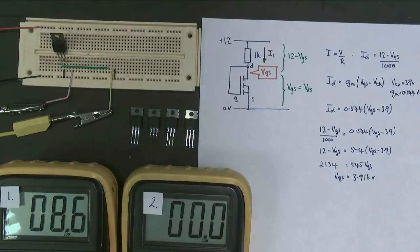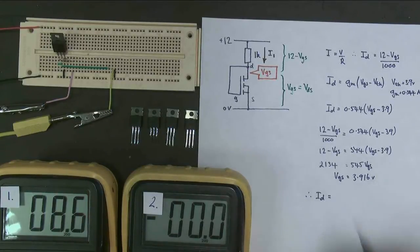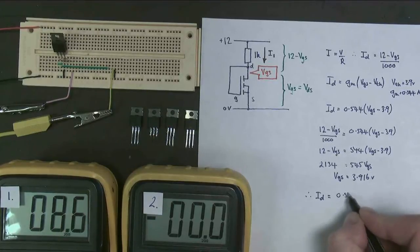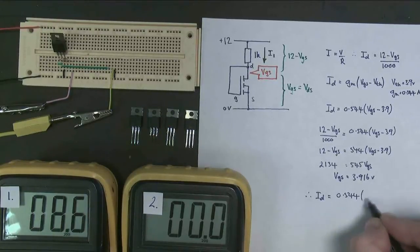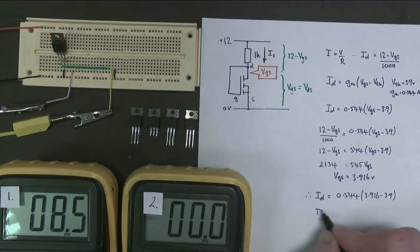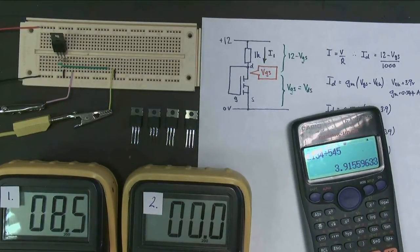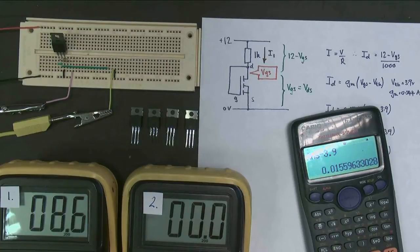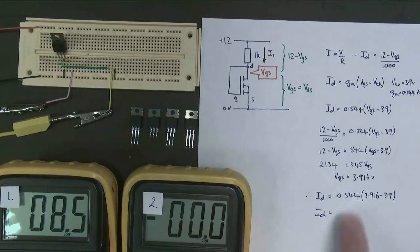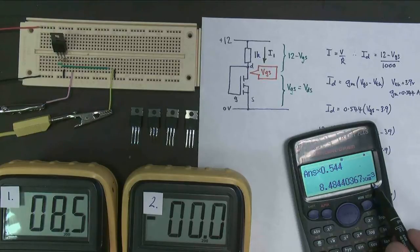Next, let's see if we can work out what the current is. So we'll put it back into this equation here. And therefore ID equals 0.544 times 3.916 minus 3.9. ID equals, here's my previous value, minus 3.916, multiplied by 0.544 equals 8.48 times 10 to the minus 3.